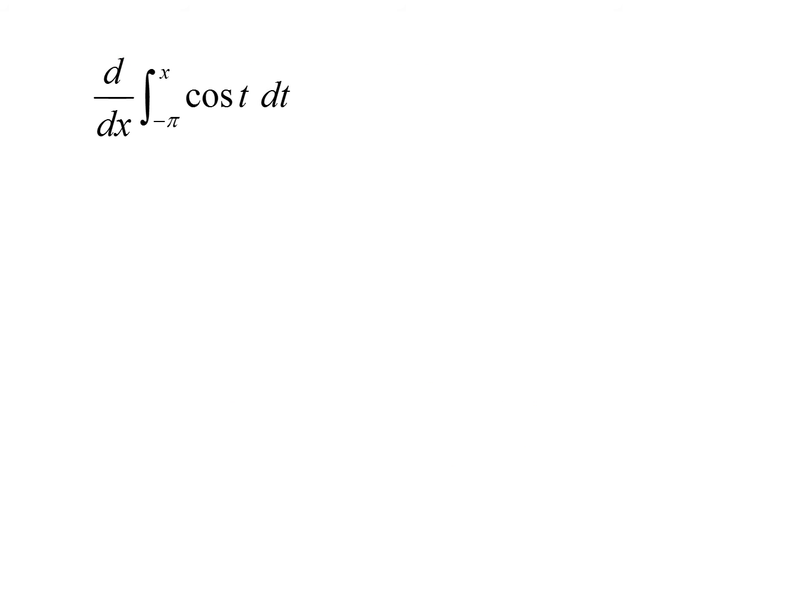Let me show you how this works, starting with the long way. If I were to do this, the first thing I would do is integrate cosine of t dt, which we all know is sine of t. And I'm evaluating that from x to negative pi. So evaluating that, I get sine x minus sine of negative pi. And now I'm taking the derivative of that. What's the derivative of sine x? It's cosine x.